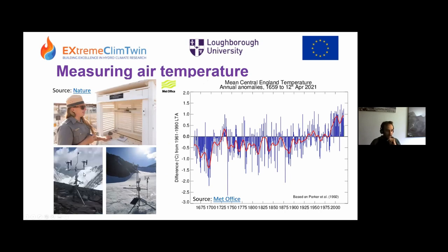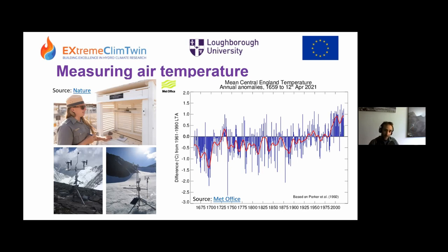How do we measure air temperature? These records go back a very long time — one of the longest observed meteorological quantities is air temperature. The longest record in the world is from Central England, right near where I'm sitting in Loughborough in the East Midlands. It goes back to 1667 — the Central England temperature series. It's been observed for such a long time because it's quite simple to monitor air temperature, historically using mercury thermometers, where mercury expands when heated and takes up more space. We measure that to track changes in air temperature.